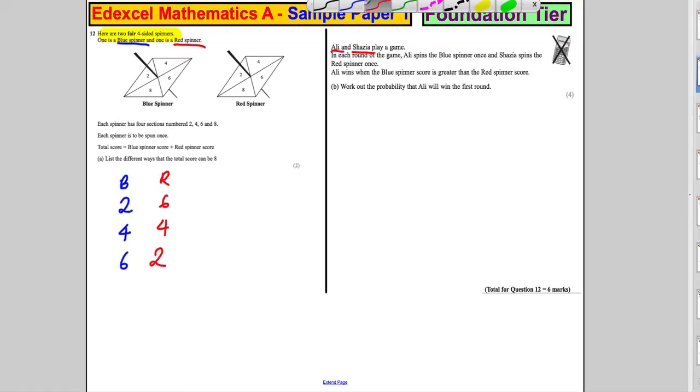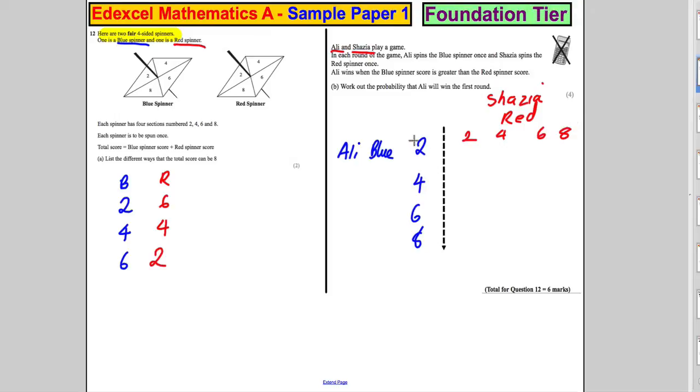Let's just list the options. Ali has the blue and it can either get 2, 4, 6, or 8. Shazia gets the red and it can either get 2, 4, 6, or 8. It's clear that these are the only possible outcomes.